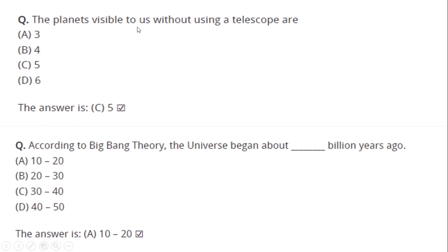The planets visible to us without using a telescope are five visible planets. According to the Big Bang theory, the universe began about 10 to 20 billion years ago.